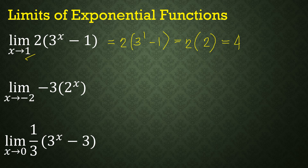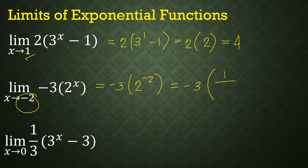On the second example, let x = -2: we have -3 × 2^(-2). Since 2^(-2) = 1/4, we get -3 × 1/4, and the final answer is -3/4.